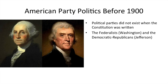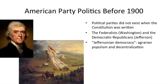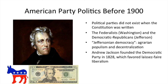Jeffersonian democracy refers to agrarian populism — favoring the farmer — and decentralization of power, more states' rights thinking. Andrew Jackson, who also became president, founded the Democratic Party in 1828, which at that time favored laissez-faire liberalism — a French term meaning economic liberalism, being in favor of deregulation and free trade. This is more in common with conservatism today, not liberalism today. Jackson's face is on the $20 bill, and he founded the Democratic Party, even though it has changed a lot.